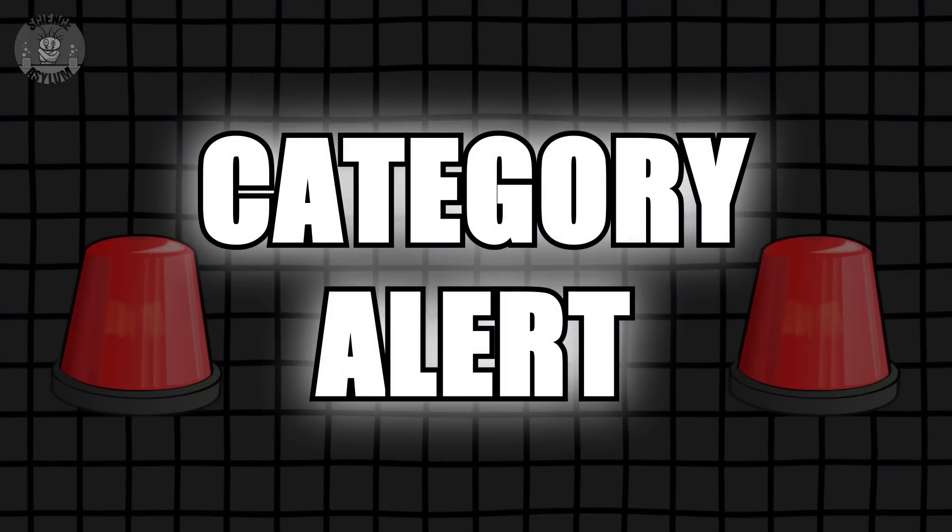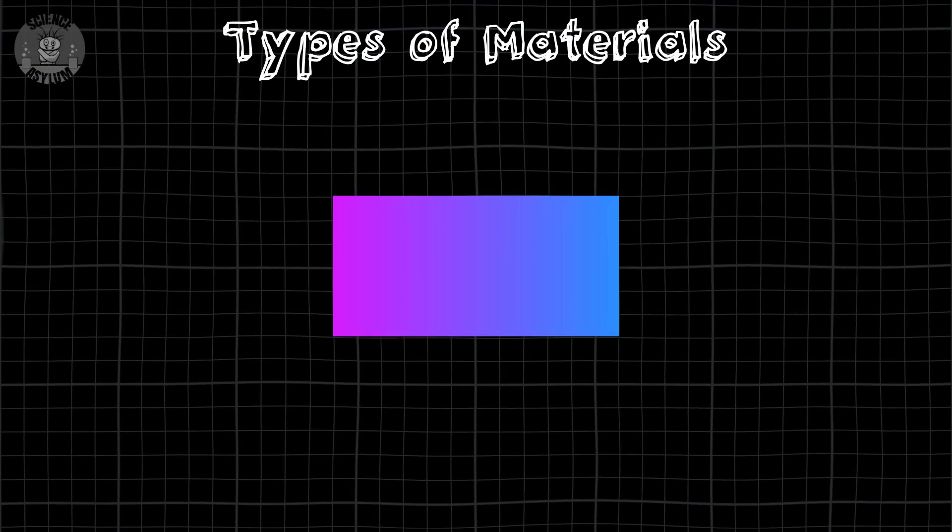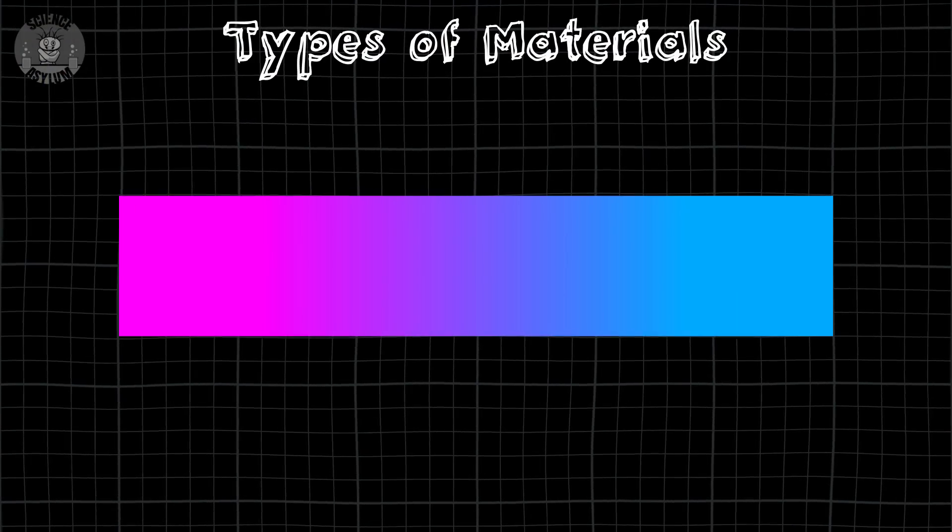Category alert! Quick disclaimer: always be cautious of categories. They give us these little bite-sized pieces our limited brains are capable of understanding, but reality consistently resists that kind of simplicity. Like most things, materials fall on a spectrum, with conductors on one end and insulators on the other.